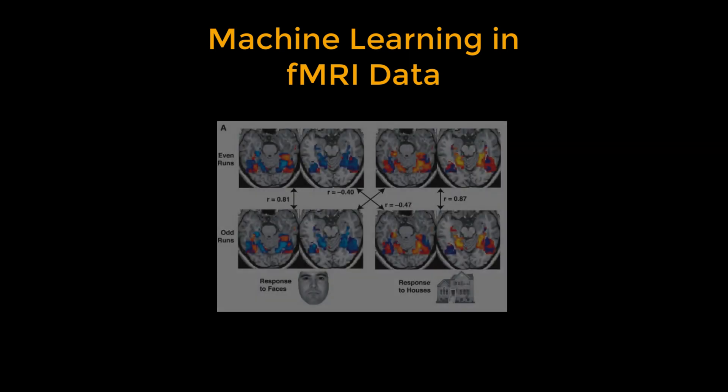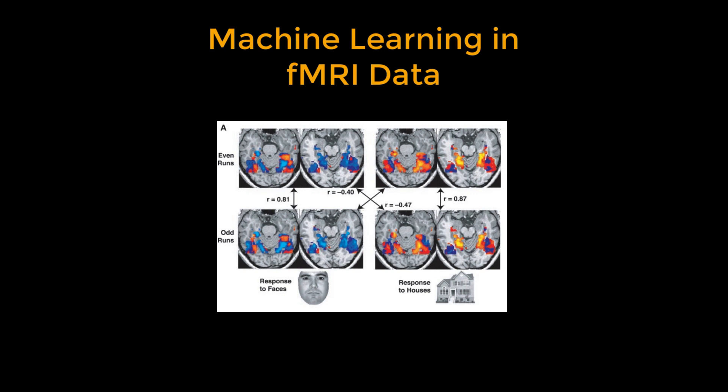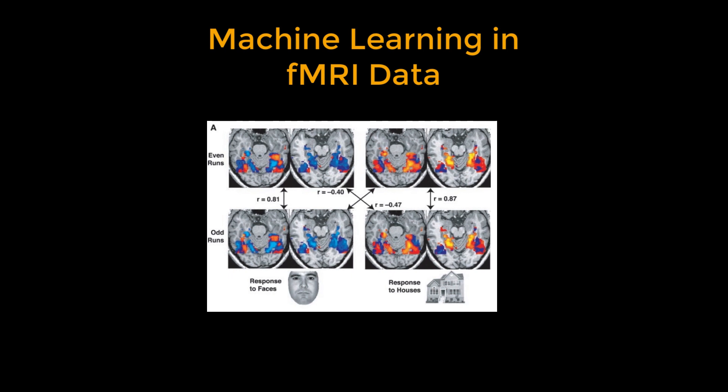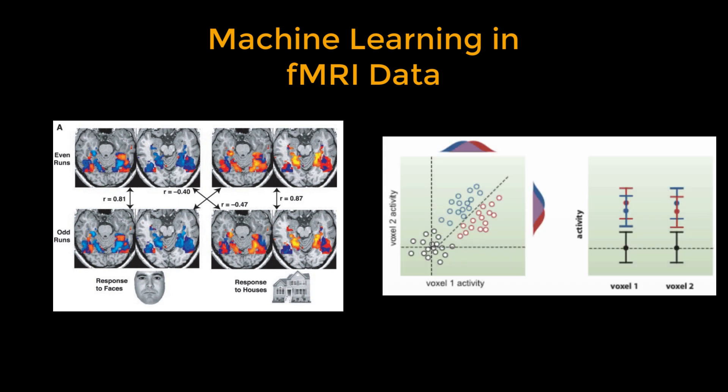The same logic applies to fMRI data. Back in 2001, James Haxby and colleagues showed several different pictures to their subjects — faces, houses, chairs, and other categories. The resulting brain map was then correlated with other instances of the same category or a different category. Even though there was a high degree of overlap of brain activity between the conditions, the correlations were much higher within categories than between categories, suggesting that the patterns can be used to classify stimuli and cognitive conditions.